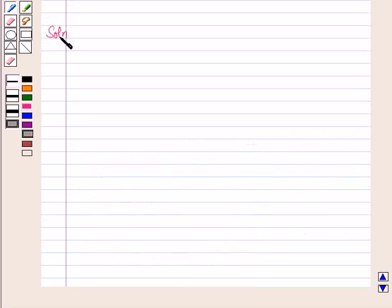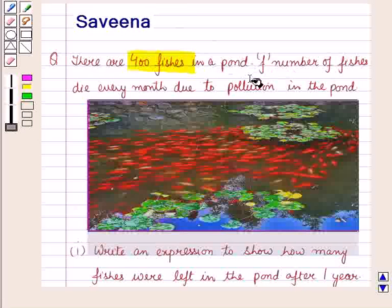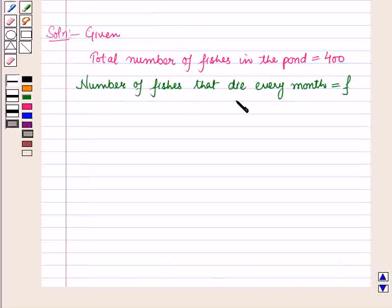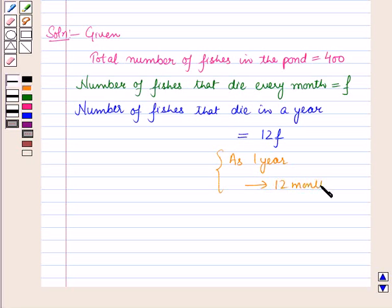Now let us start with the solution of the given question. It is given that there are 400 fishes in a pond and F number of fishes die every month due to pollution. If the number of fishes that die every month is F, then the number of fishes that die in a year will be equal to 12F, as we know there are 12 months in one year. So if F fishes die in one month, then 12F fishes die in 12 months, that is in one year.